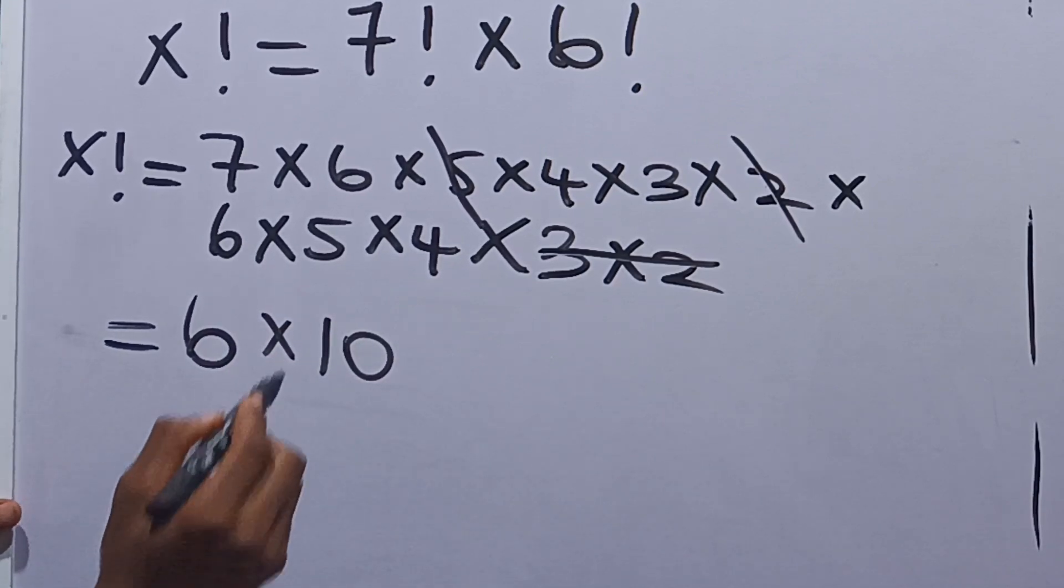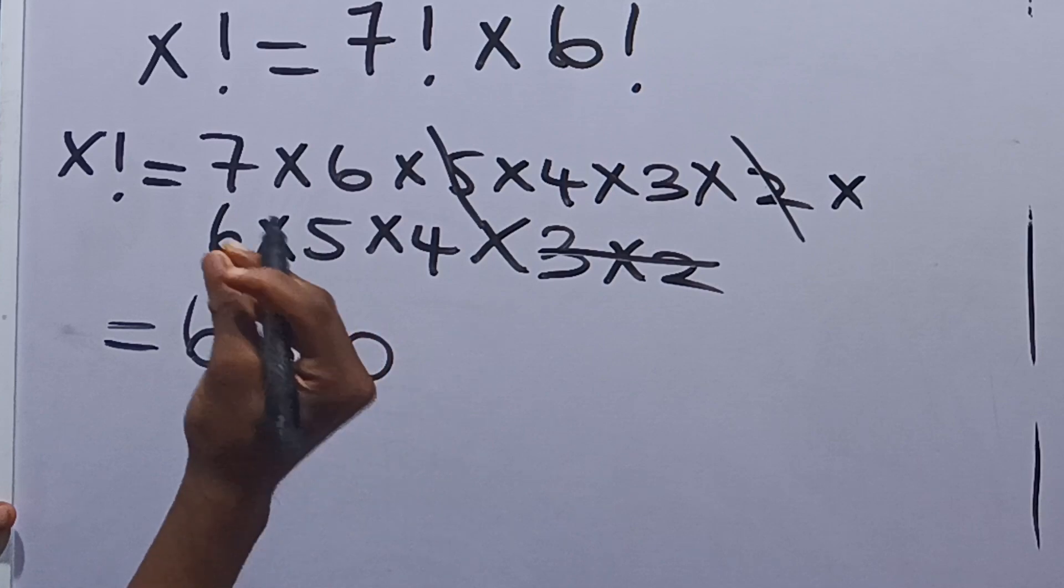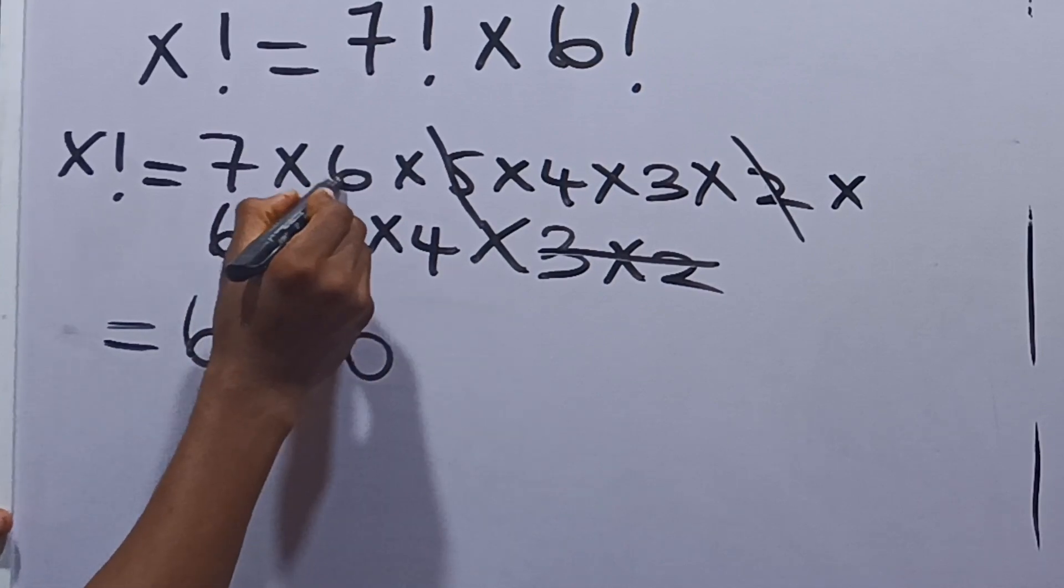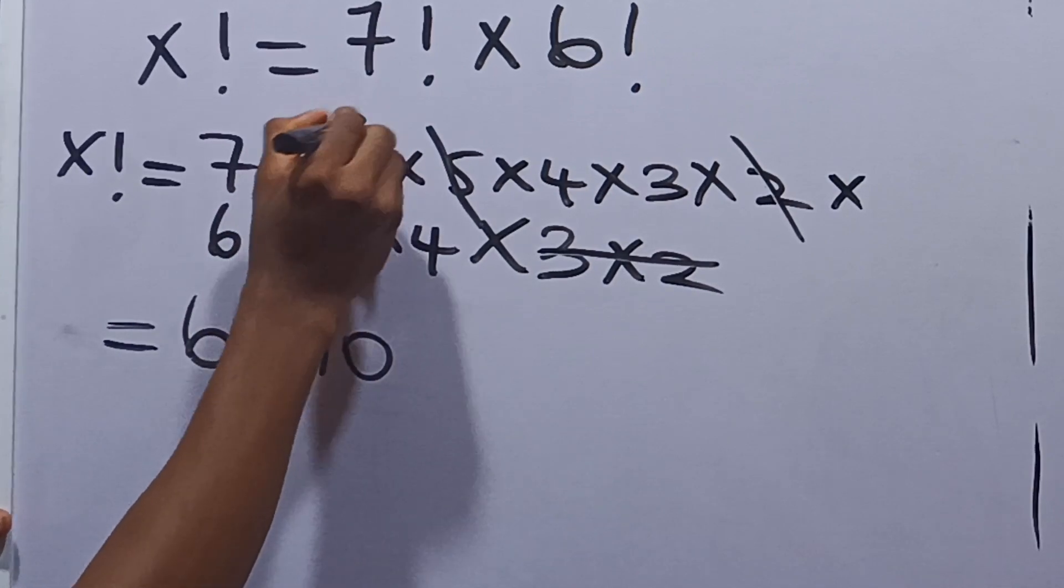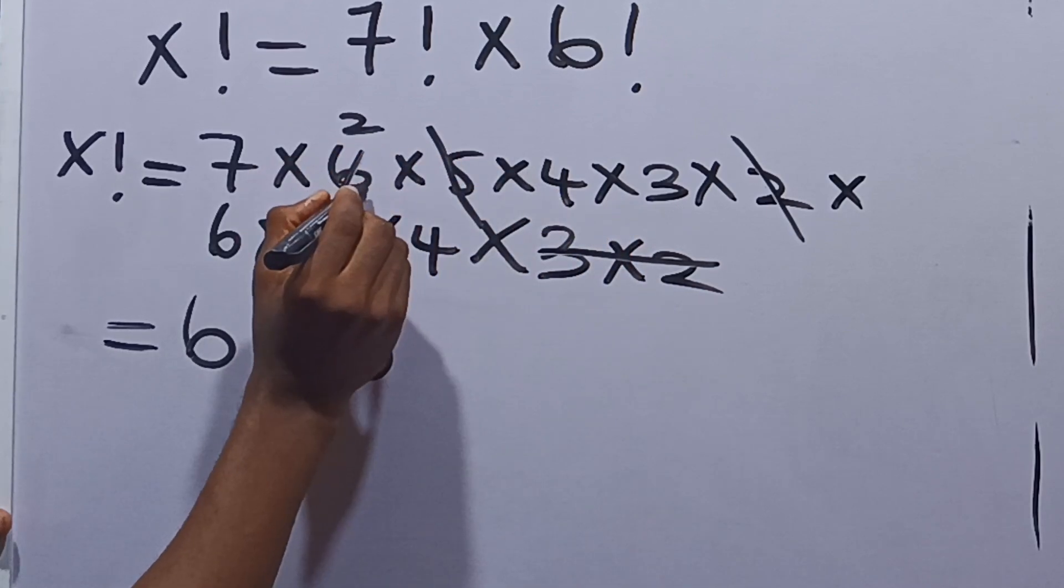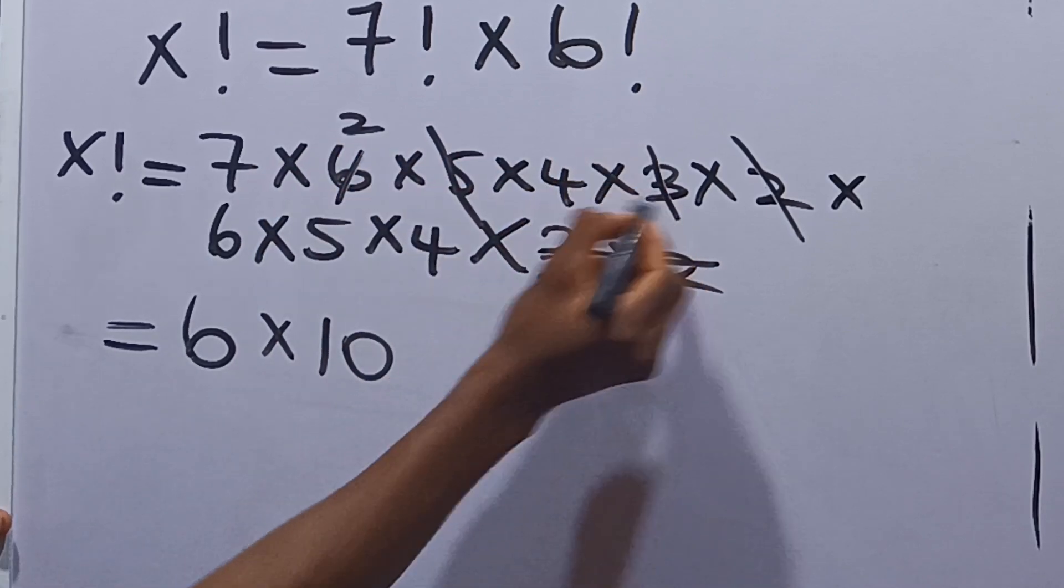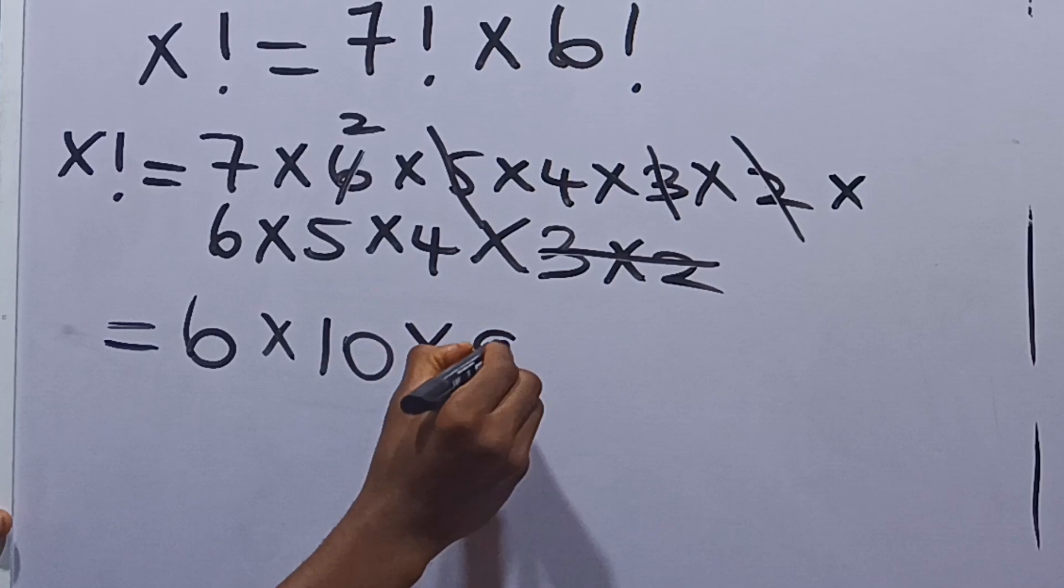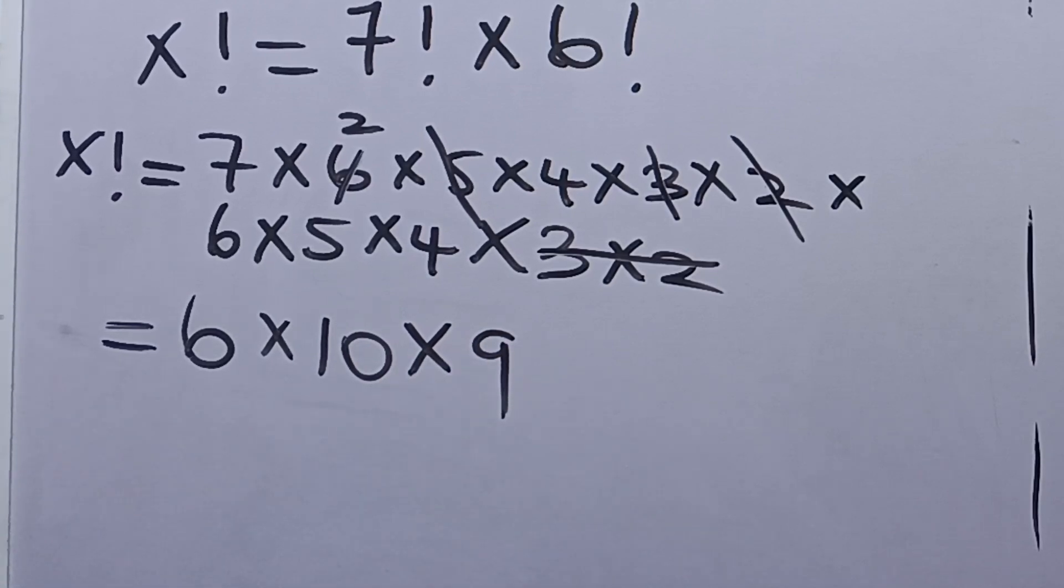Now the next number we have - we are looking for small numbers. We can take 3 here. Multiply the 3 we took from here and this 3 to give us 9. So we've gotten 9. You see how the numbers are slowly leaving.